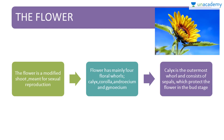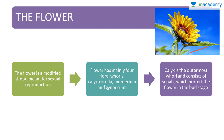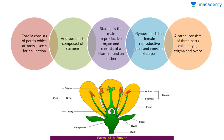Now we will learn about the flower. The flower is a modified shoot meant for sexual reproduction. The flower has mainly four floral whorls: calyx, corolla, androecium, and gynoecium. Calyx is the outermost whorl and consists of sepals, which protect the flower in the bud stage. Corolla consists of petals, which attract insects for pollination. Androecium is composed of stamens — the stamen is the male reproductive organ and consists of a filament and an anther, which you can see in this figure.